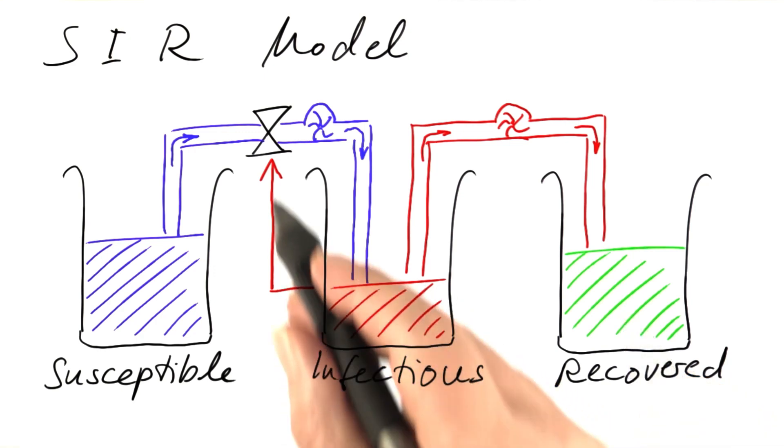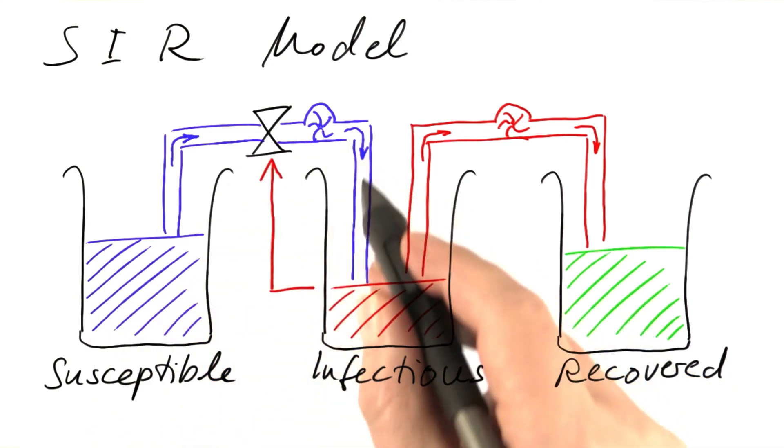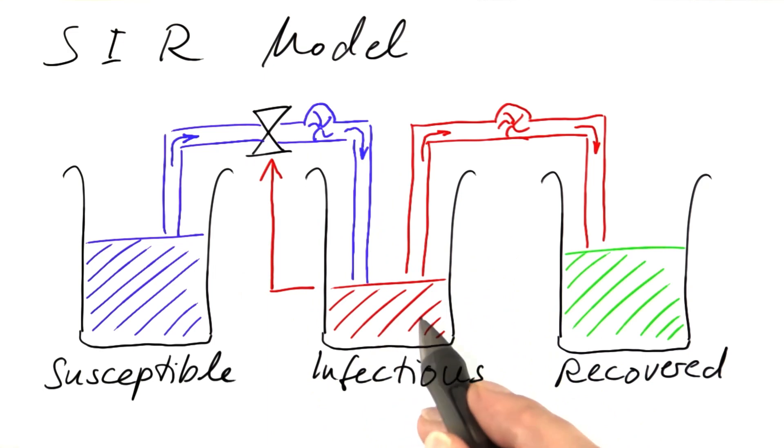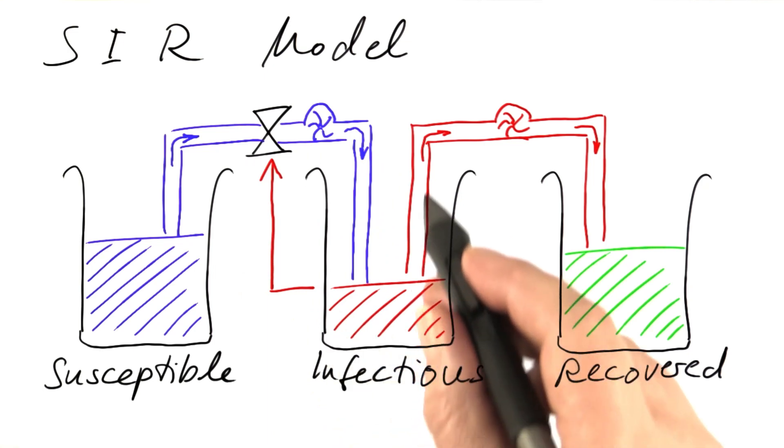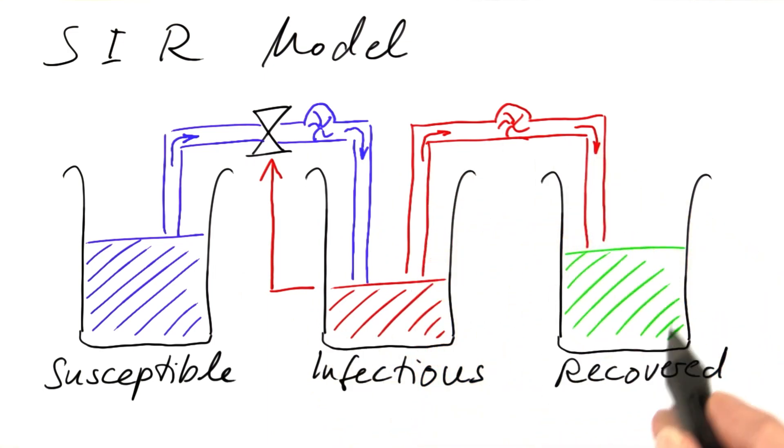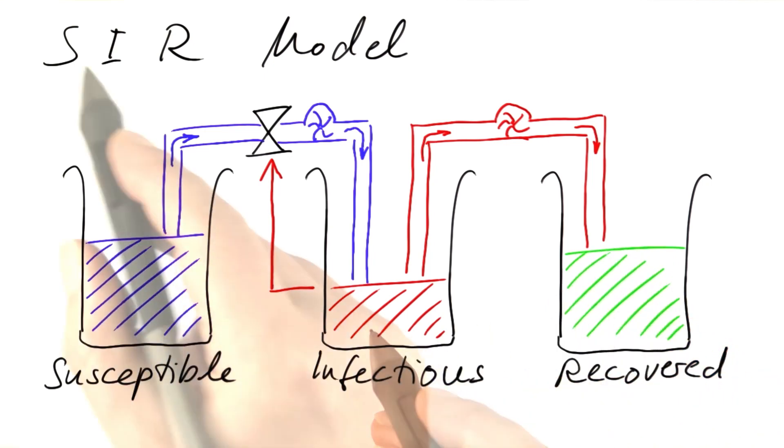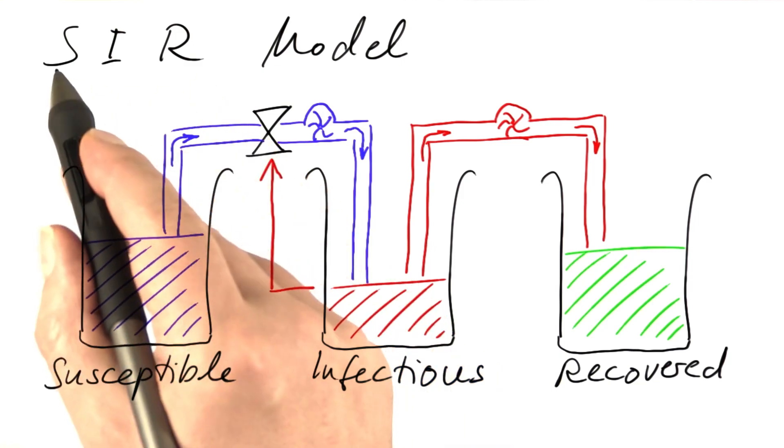Depending on the number of infectious persons, susceptible persons become infected and hence infectious. And after a while, infectious persons recover. We assume that recovered persons are immune against the disease and cannot be affected again. This is the SIR model: susceptible, infectious, recovered.